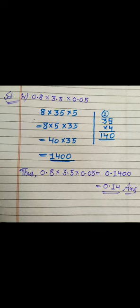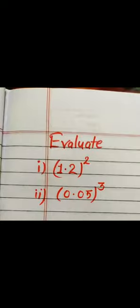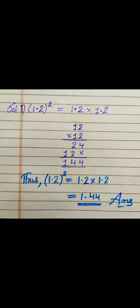By this concept we can solve these kinds of questions also. Here we have to evaluate the square of 1.2 and the cube of 0.05. For the first one, the power is 2, so we can write 1.2 as 1.2 into 1.2. First we multiply without decimal: 12 into 12, and we get 144. We have a total of 2 decimal places, so we mark the decimal after 2 digits, giving us 1.44. This is our final answer.